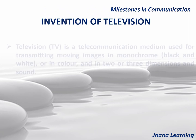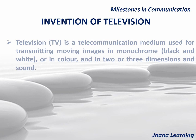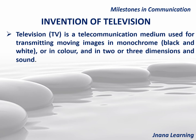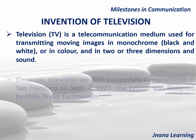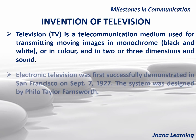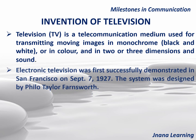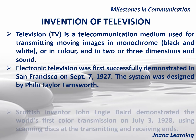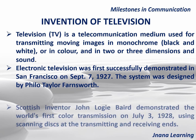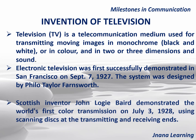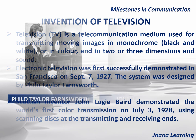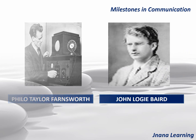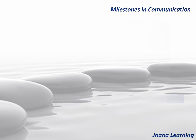The next milestone is the invention of television — a telecommunication medium for transmitting moving images in monochrome or color, in two or three dimensions, and sound. Electronic television was first successfully demonstrated in San Francisco on September 7th, 1927, with a system designed by Philo Taylor Farnsworth. Scottish inventor John Logie Baird demonstrated the world's first color television transmission on July 3rd, 1928.